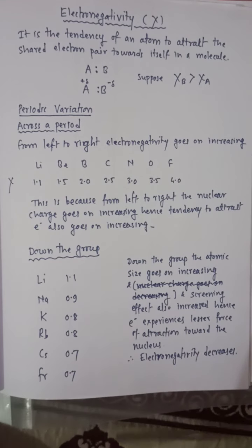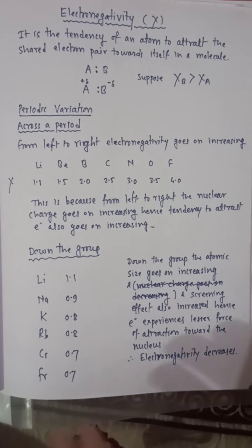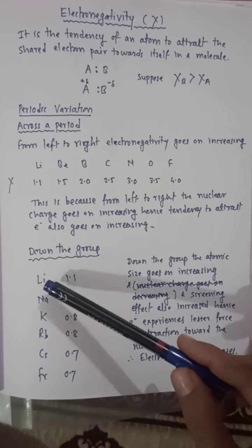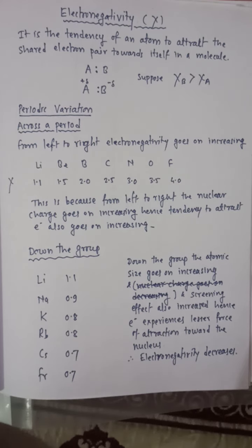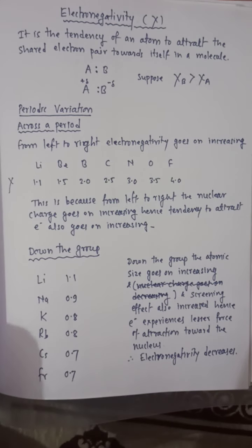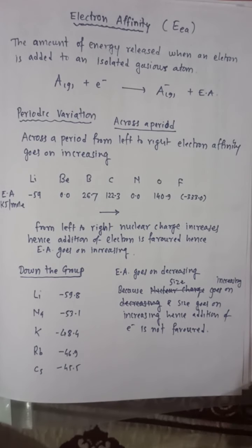Down the group, electronegativity goes on decreasing because atomic size goes on increasing — bigger and bigger — and screening effect also increases. Therefore, the electron experiences lesser force of attraction towards the nucleus. This is why electronegativity decreases down the group. So we have covered both terms: electron affinity and electronegativity.